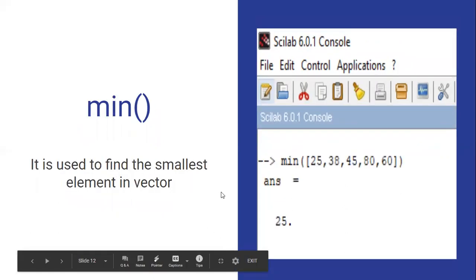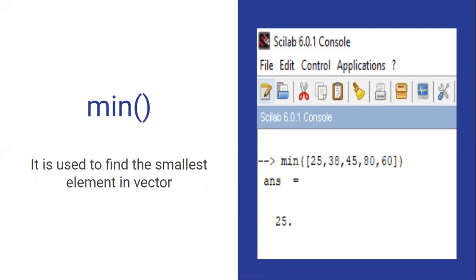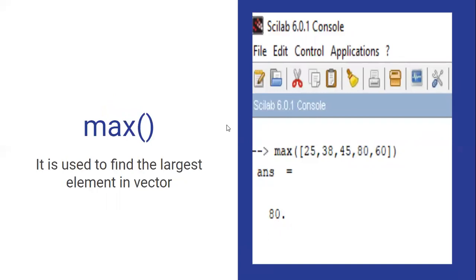The next one is min. Min is used to find the smallest element in your vector. Whatever elements you have in the vector — five, six, or ten — it will search for the minimum value and give the answer. The command used is min. The next one is max — maximum — which is used to find the largest element in the vector. Out of all elements, it will choose the largest one and produce the answer. Thank you.